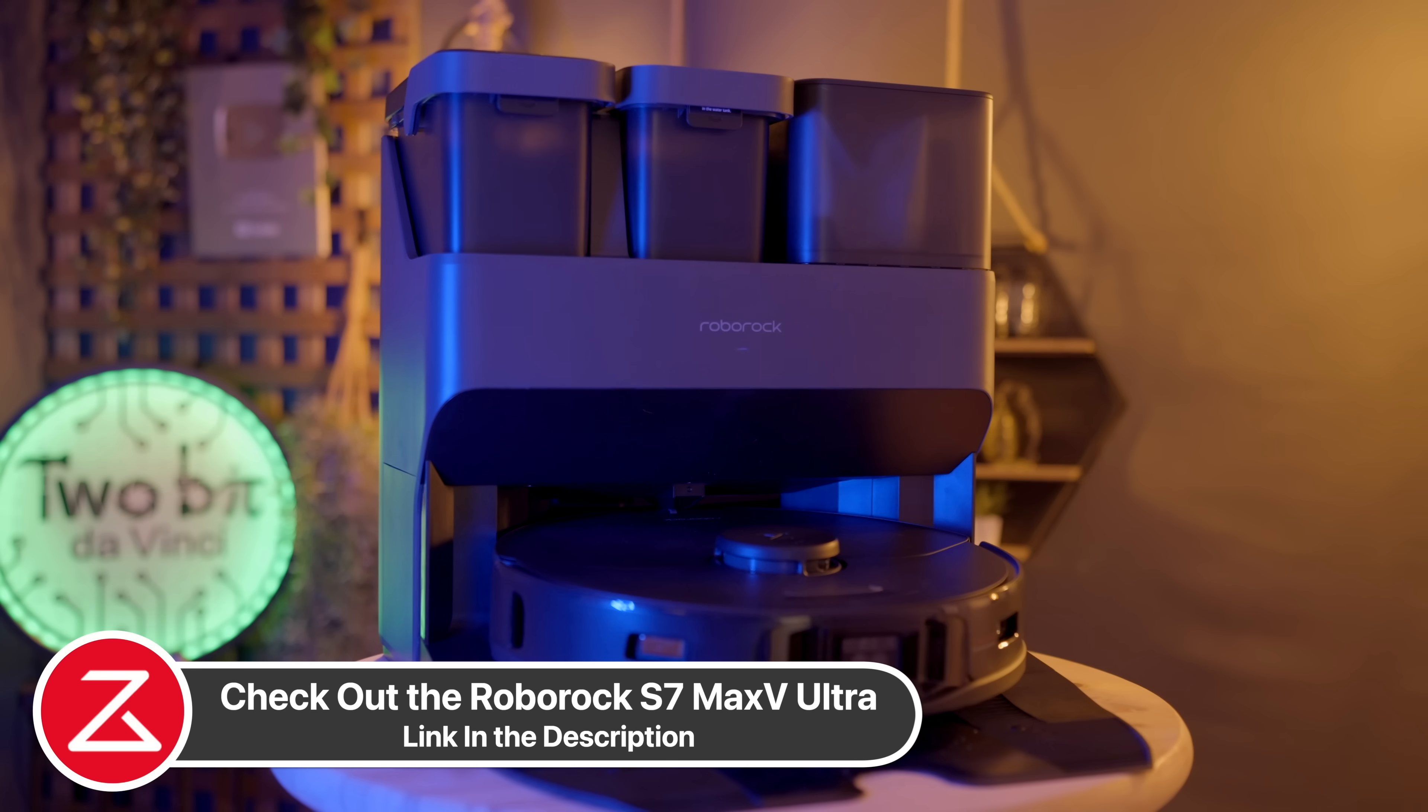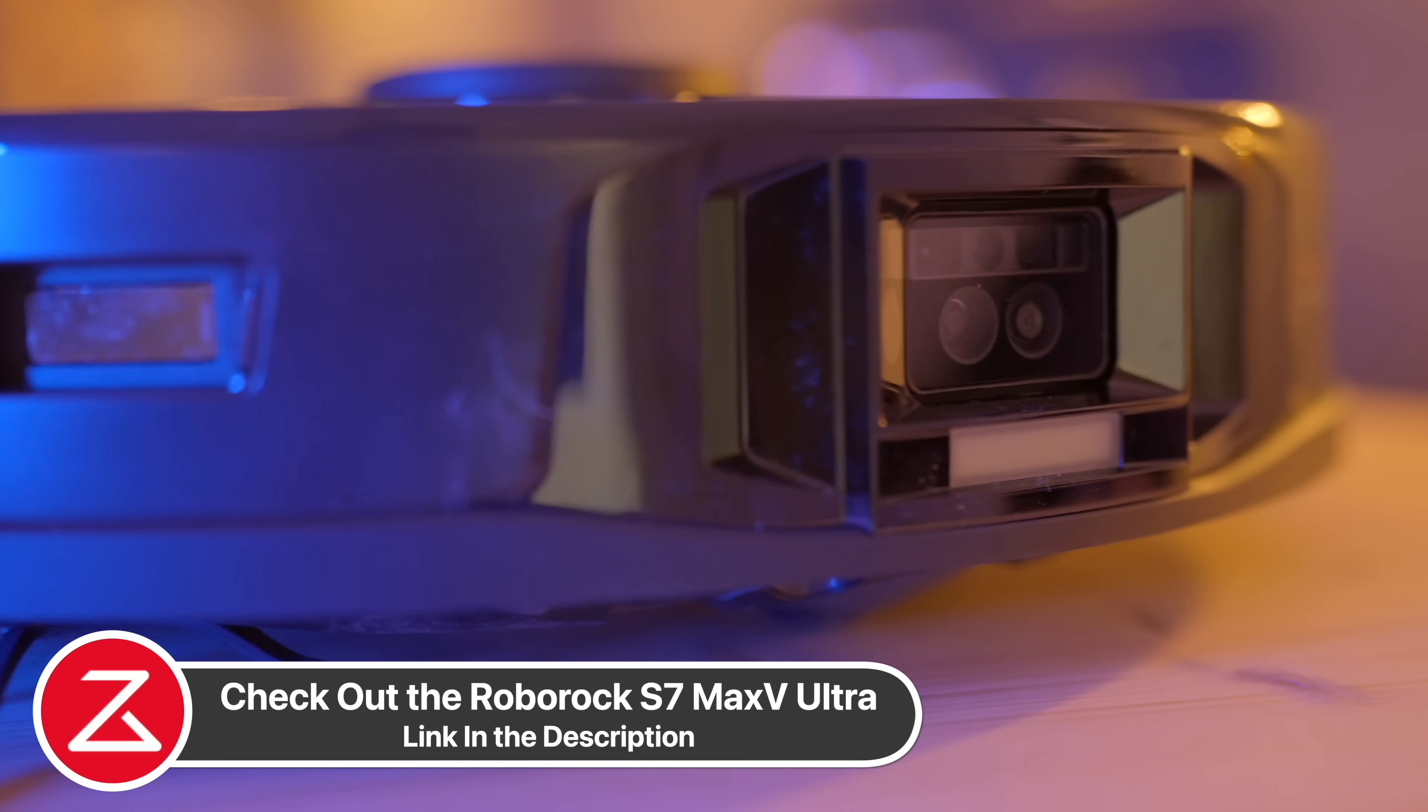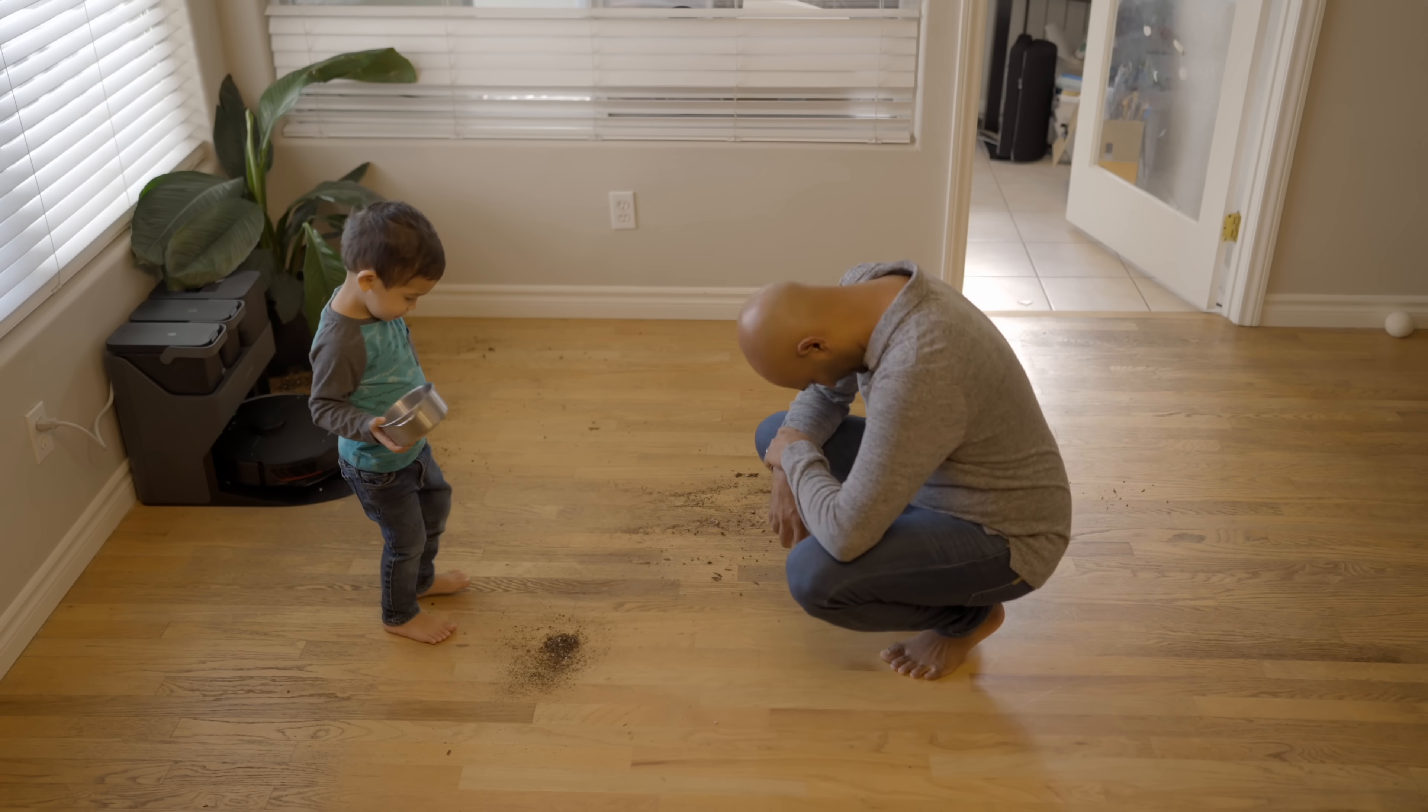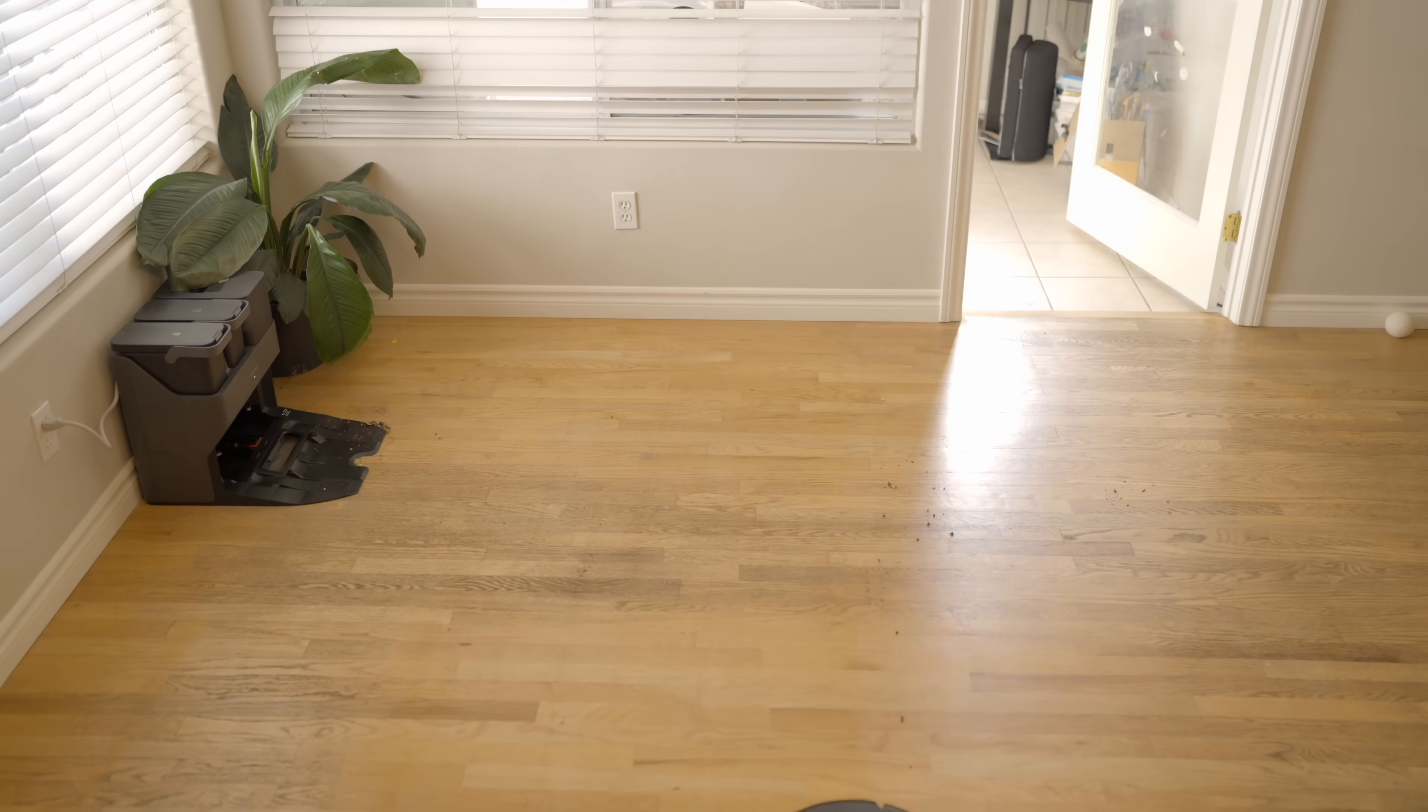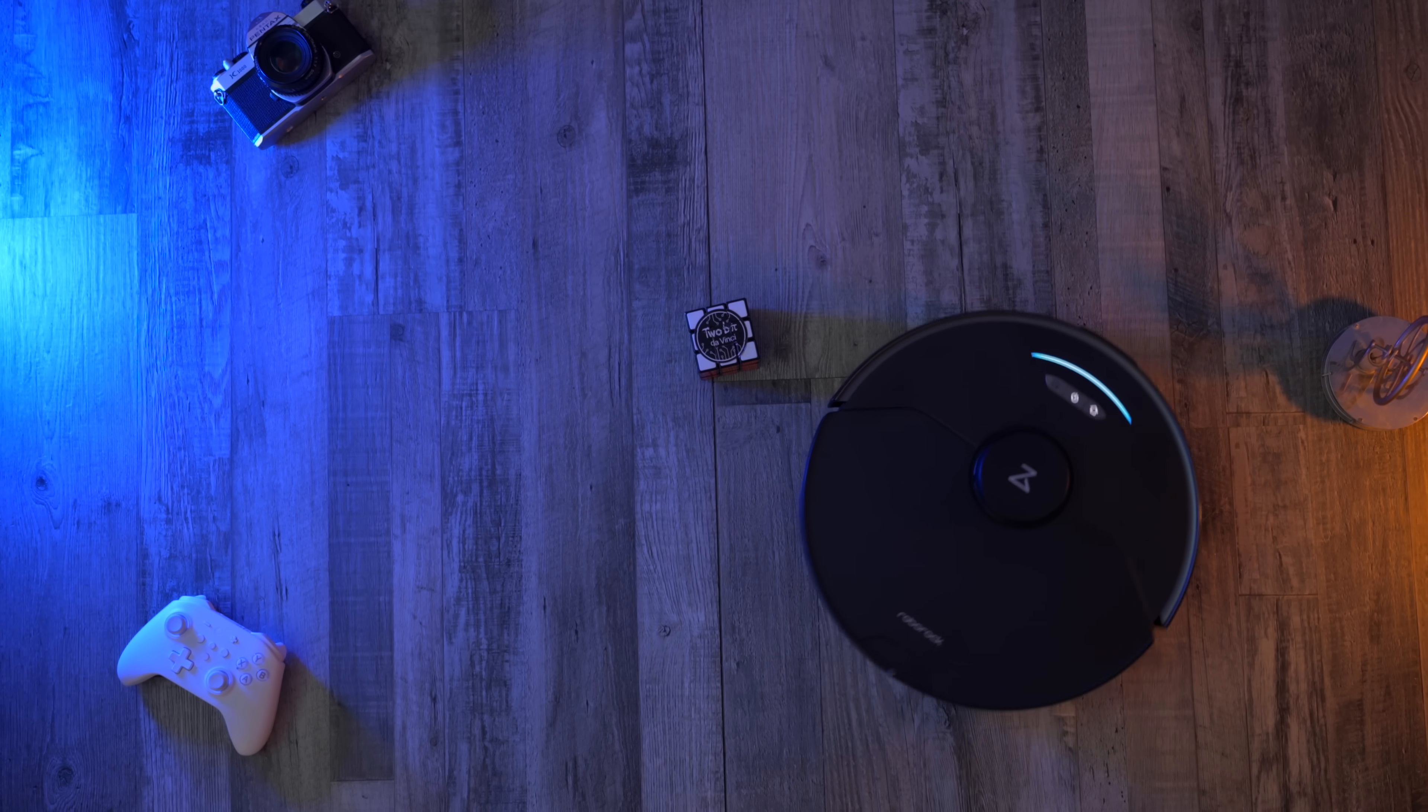And this, the S7 Max V Ultra. I've had my Roborock S7 Plus cleaning my house every day for the past year, and it's been flawless. But the S7 Max V Ultra is an unbelievable upgrade, and here's why. It has twice the suction power at 5,100 pascals, rivaling even corded vacuums. It has LiDAR and maps your entire house room by room, and with the smartphone app, you can clean everything or just select rooms. But now it has cameras, and with its reactive AI 2.0 software, it can find obstacles on the floor and avoid them.